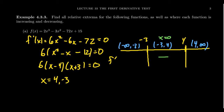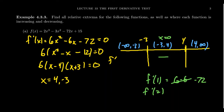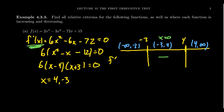It doesn't matter which test point you use between negative 3 and 4 — they all give a negative result. For what's bigger than 4, I like to use x = 10 since powers of 10 are easy to calculate. Actually, I prefer to use infinity as a test value. With a polynomial function, as x approaches infinity only the leading term matters. The leading term of the derivative is 6x², which approaches positive infinity, so the derivative is positive for x > 4.